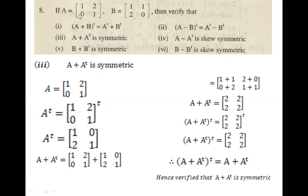Matrix A is given as a square matrix of order 2×2: [1, 2; 0, 2]. First we write A, then compute A^T by converting rows to columns. The next step is to find A + A^T. We add the corresponding elements according to the matrix addition rule. After adding, A + A^T equals [2, 2; 2, 2]. Now we need to take the transpose of the whole expression A + A^T to verify symmetry.